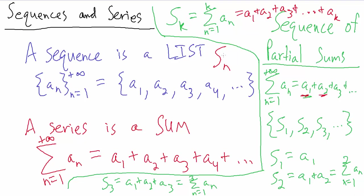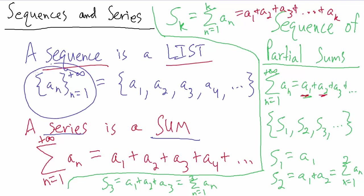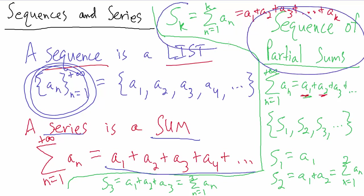To recap: a sequence is just a list, and a series is a sum of the elements of a sequence. A series has two sequences associated with it — the sequence a_n that tells you what the terms are, and the sequence of partial sums, which is what we covered in this video. That wraps up sequences, series, their differences, and what a sequence of partial sums is.